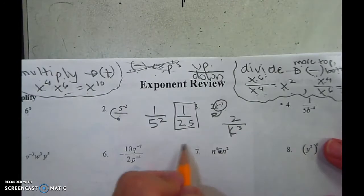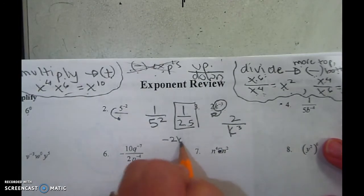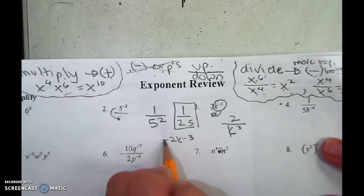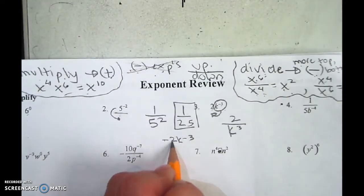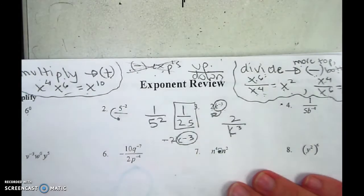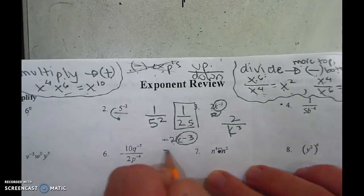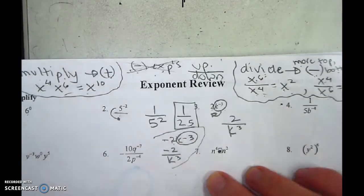Now I would like to emphasize, if this same problem said negative 2k to the negative 3, negative numbers are okay. We've existed with those forever. It's just the negative exponent that would be bad. So in that case, the answer would be negative 2 over k cubed. So keep that in mind.